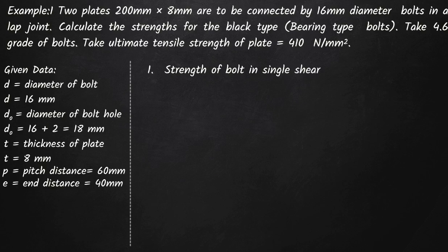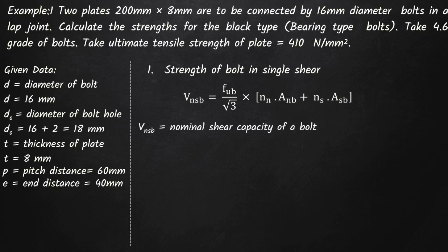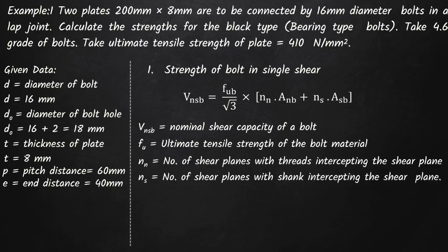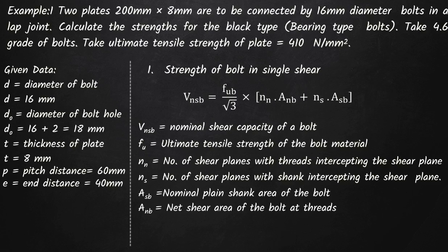Starting with Step 1: strength of the bolt in single shear. As per IS800, V_NSB equals F_UB divided by root 3, multiplied by (N_N × A_NB + N_S × A_SB). Here V_NSB is the nominal shear capacity of the bolt, F_UB is the ultimate tensile strength of the bolt, N_N is the number of shear planes with threads intercepting the shear plane, N_S is the number of shear planes with shank intercepting the shear plane, A_SB is the nominal plain shank area, and A_NB is the net shear area at the threads.